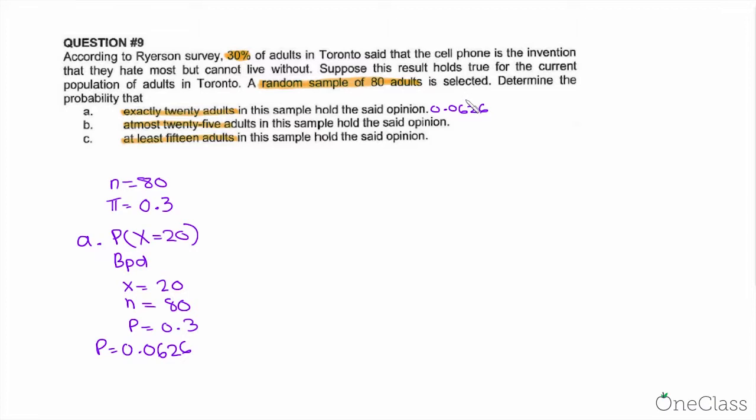Moving on to part B, which asks us for at most 25 adults in this sample hold the said opinion. At most—you need to note this down on your crib sheet—at most means less than or equal to. So at most is probability of X less than or equal to 25.